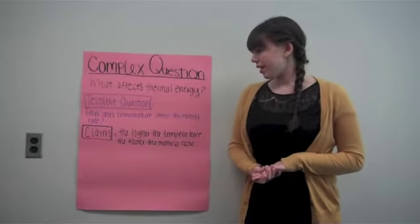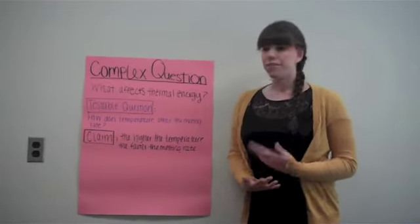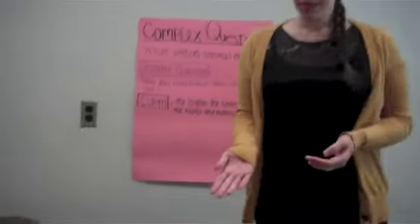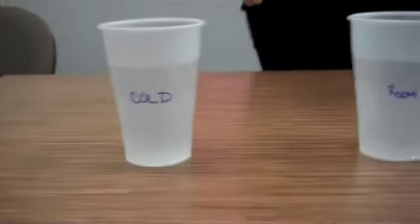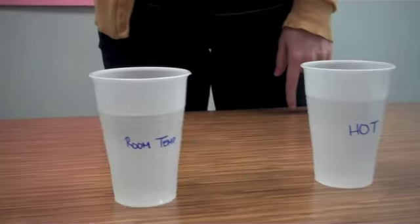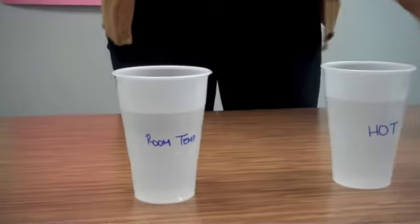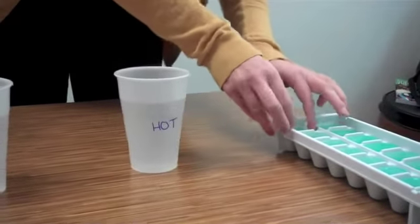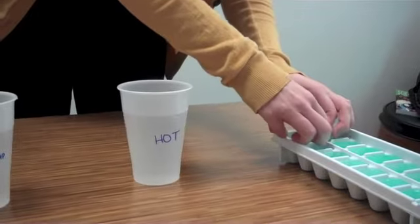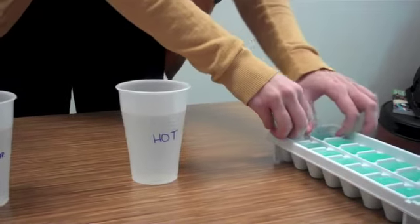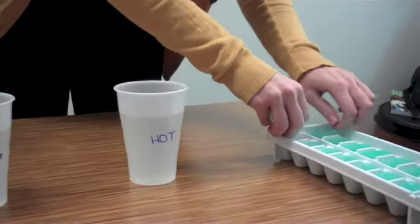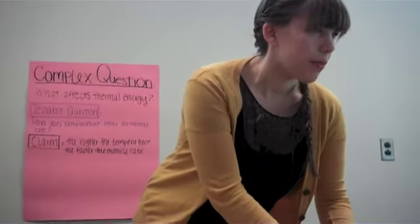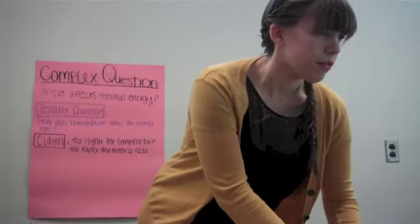Our claim is that the higher the temperature, the faster the melting rate. We have three glasses of water here — one cold, one room temperature, and one hot. We have these ice cubes that we colored with food coloring, and we're going to place one in each and then compare the melting rate for about 30 seconds.